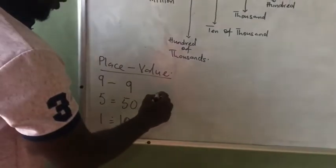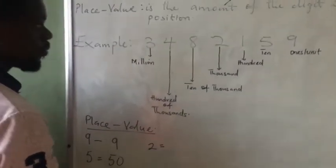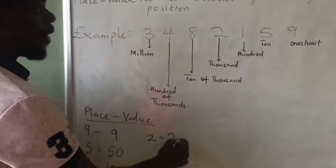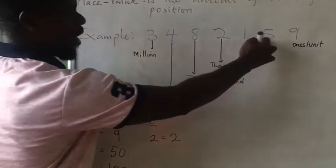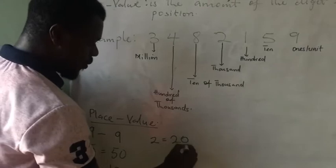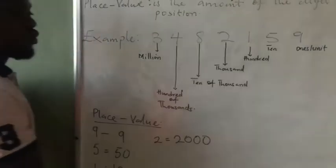We move on to the 2. You write a 2. Now we have 3 digits behind it: 1, 5, 9. Change all of them to 0. You change them to 0. You have your 2,000.